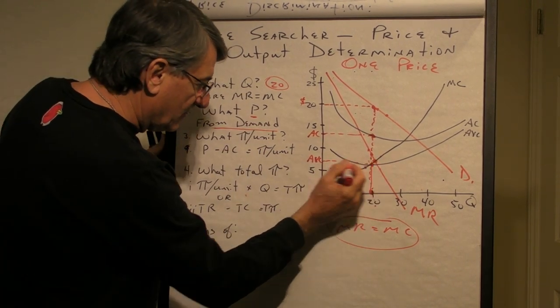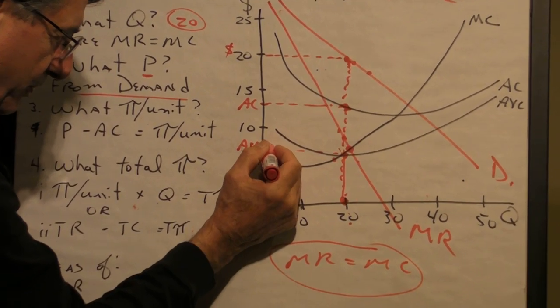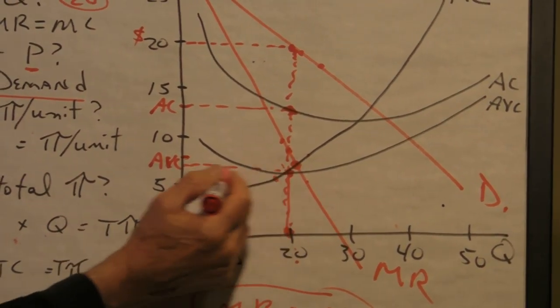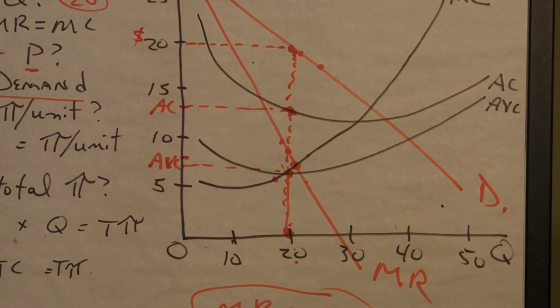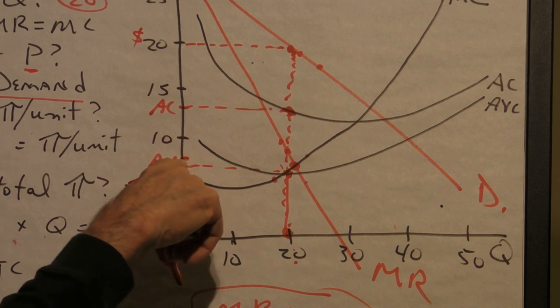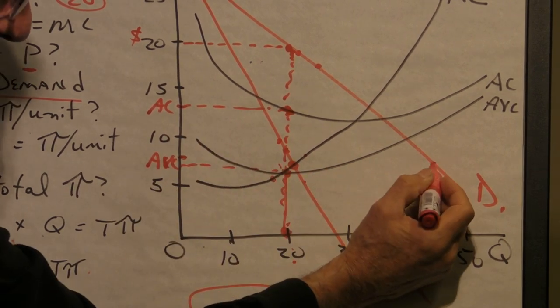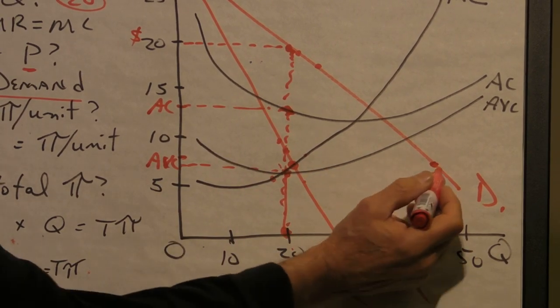Now, it's a temptation for some students to say, oh well, let's just go straight to the price axis from this intersection of marginal cost to marginal revenue. But if you were to charge $8, or whatever this amount is, this point on the demand curve says that at $8, people want to buy something like 45 of them,